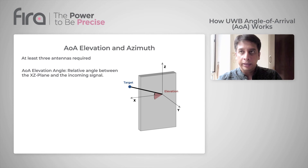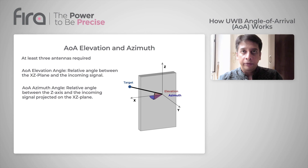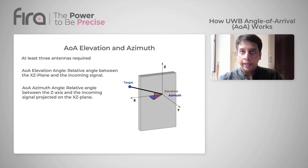The elevation angle is the relative angle between the XZ plane and the incoming signal. If there is an incoming signal from the target, the elevation is calculated between the x and z axes. The azimuth angle is the relative angle between the z-axis and the incoming signal projected on the XZ plane. It is zero on the z-axis, positive towards x in the clockwise direction, and negative towards x in the counterclockwise direction.